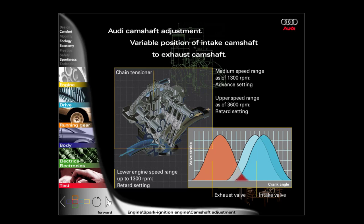In the upper engine speed range from approximately 3600 revolutions per minute, the engine management system rotates the intake camshaft back to its retard setting. The speed of the fresh gases is then so high that they even flow into the cylinder during compression.